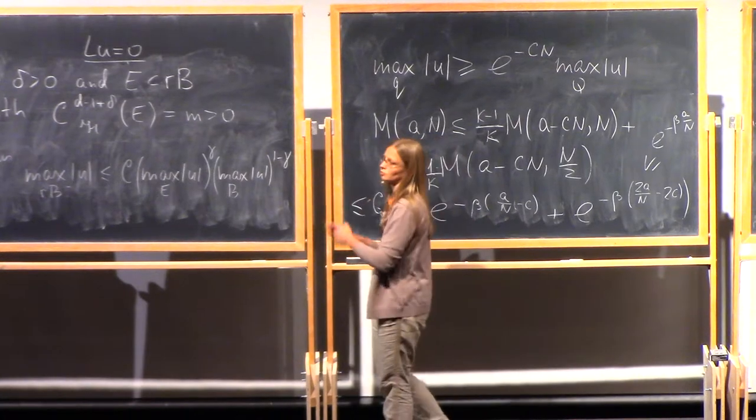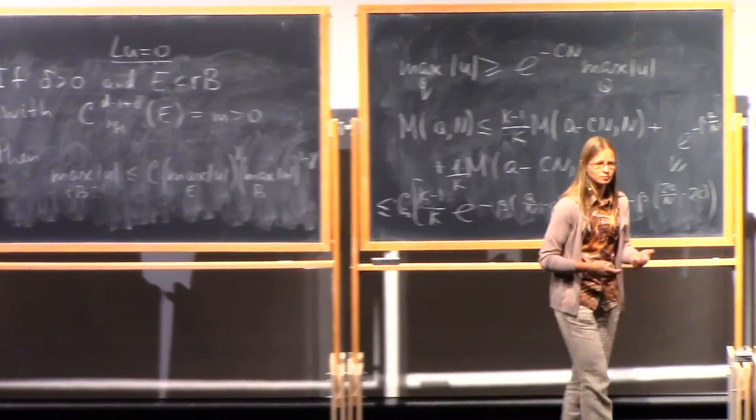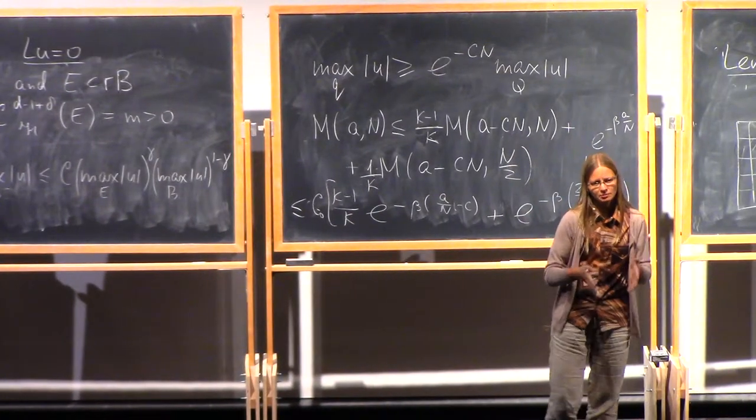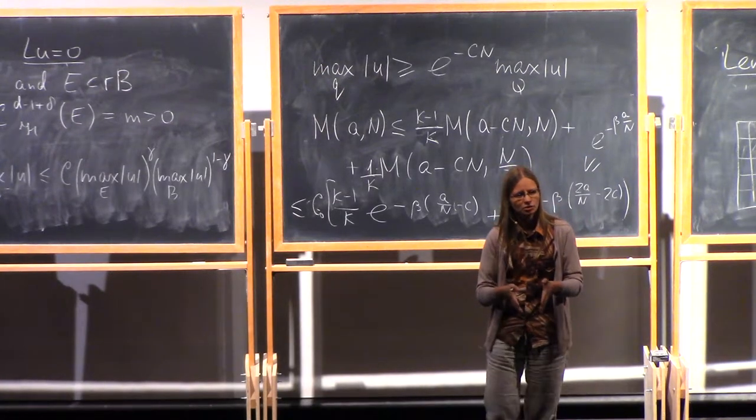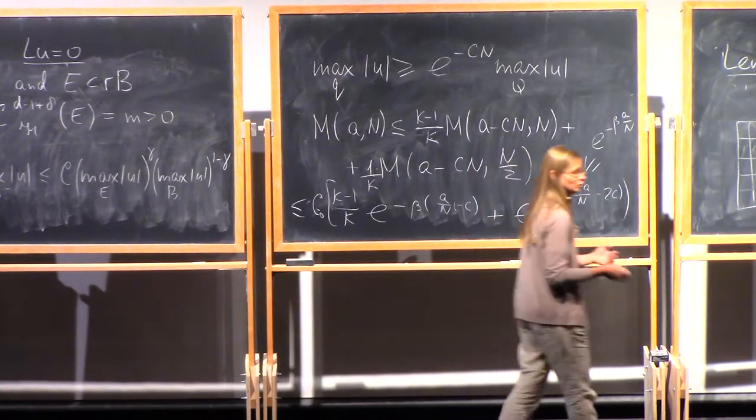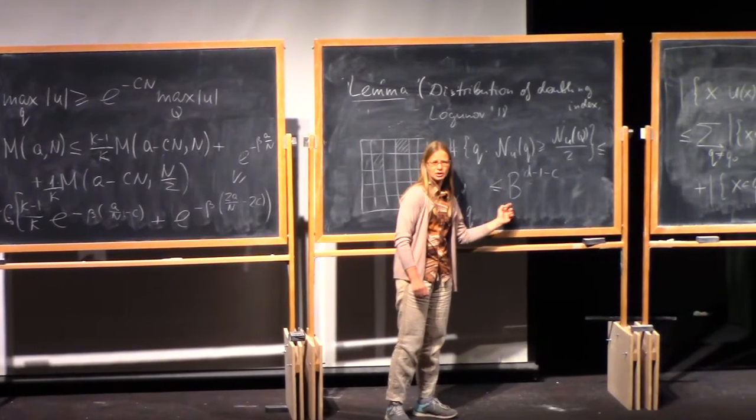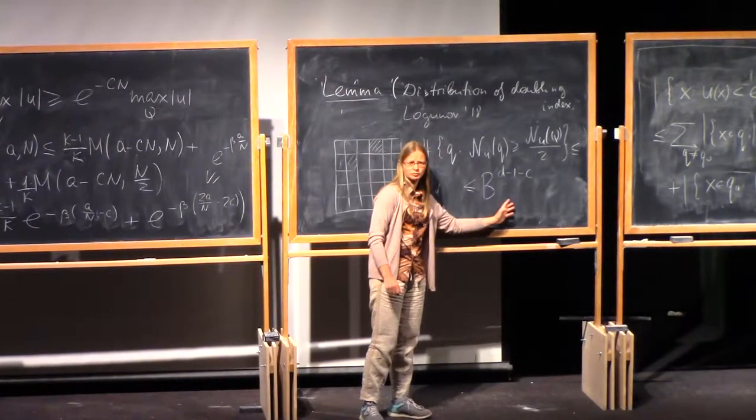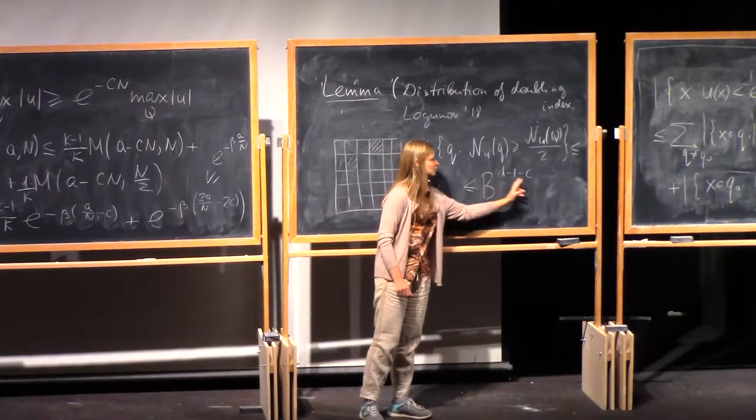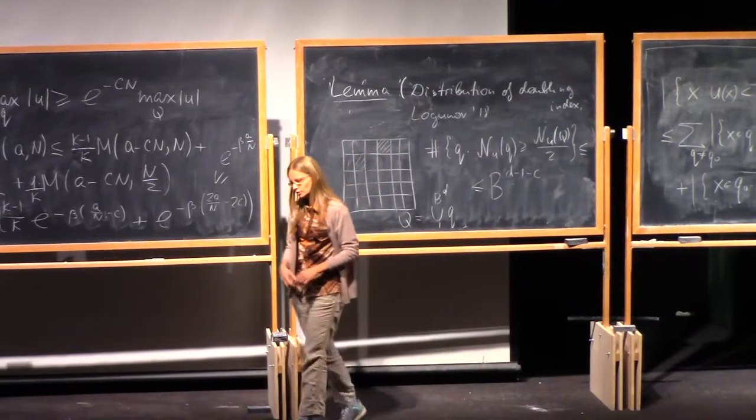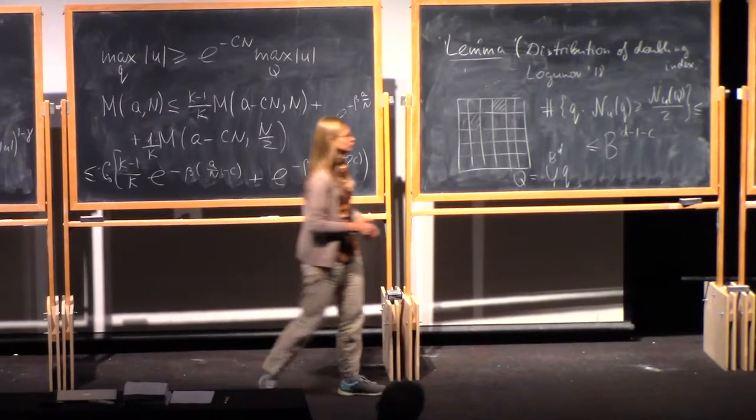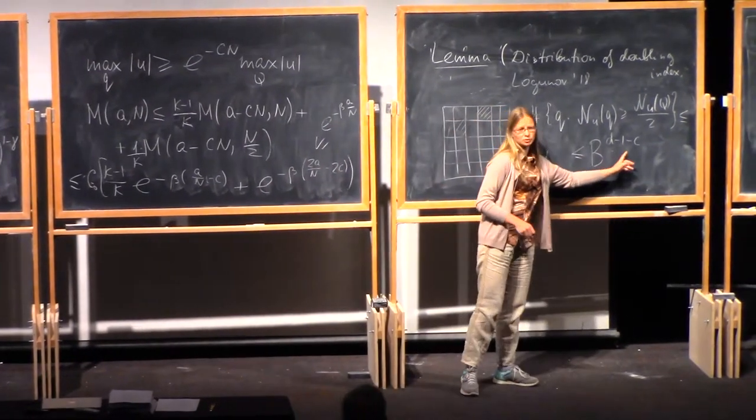And this is what allowed him to prove estimates for the nodal sets that have dimension d minus 1. In our proof, everything was simple because we were estimating something of dimension d. If you want to estimate the nodal set, you need more fine tools and this is where they come from when you know that the number of these bad cubes behaves like a power smaller than B^(d-1).